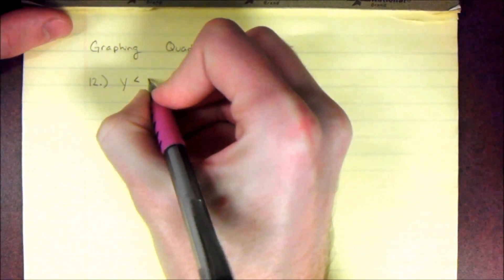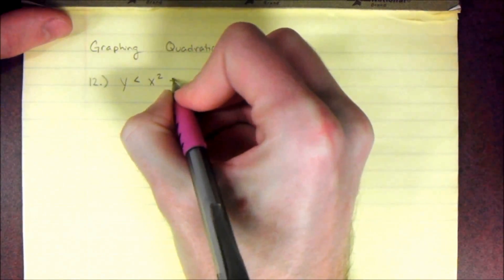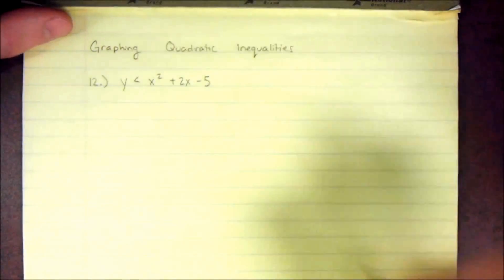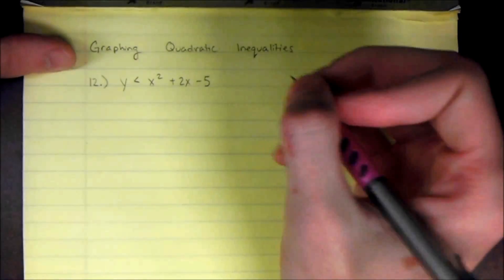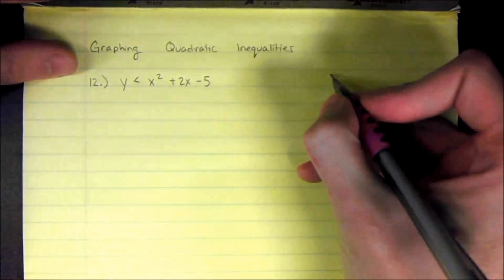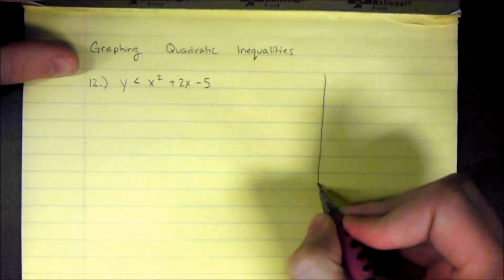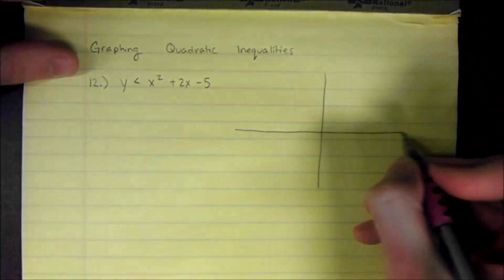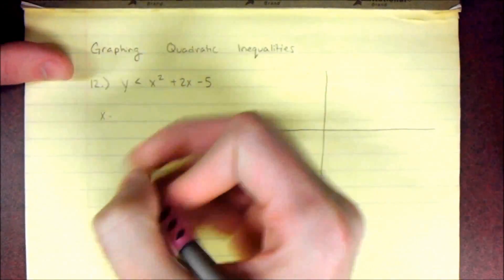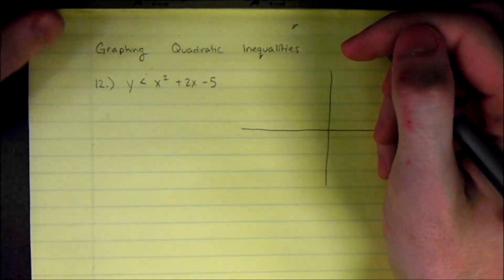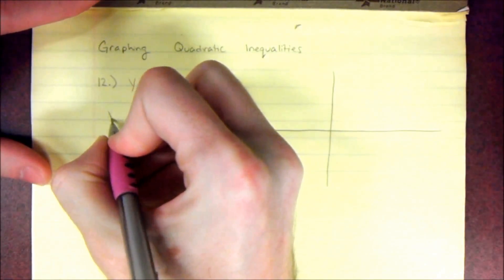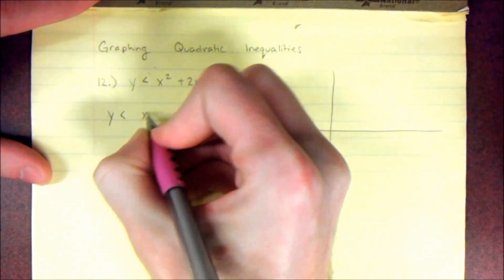I'm pulling problems out of a textbook here. For example, in this one we have y is less than x squared plus 2x minus 5. What we want to do is treat this like a normal quadratic and start graphing it. Instead of finding the axis of symmetry and vertex, let's practice completing the square, because in this case it's probably the easier way to do the problem.